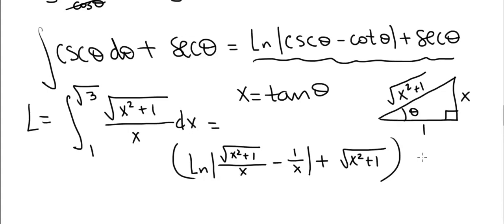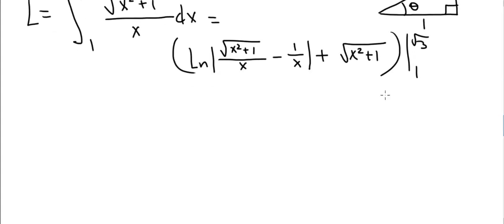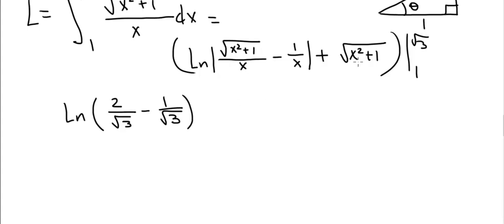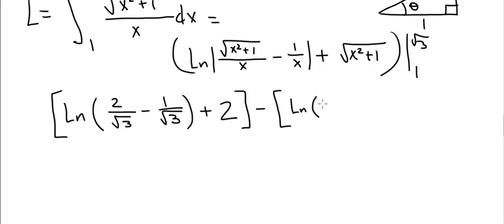Plugging in √3: x² + 1 = 3 + 1 = 4, so √4 = 2. We get ln|2/√3 − 1/√3| + 2 = ln|1/√3| + 2. Plugging in x = 1: √(1 + 1) = √2, giving ln|√2 − 1| + √2. Our final answer will be the difference of these two evaluated expressions.